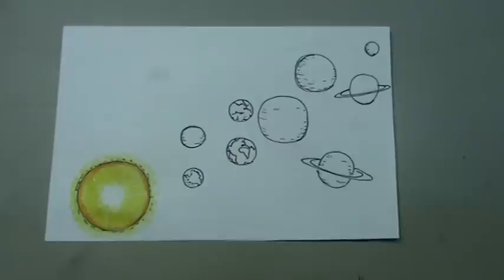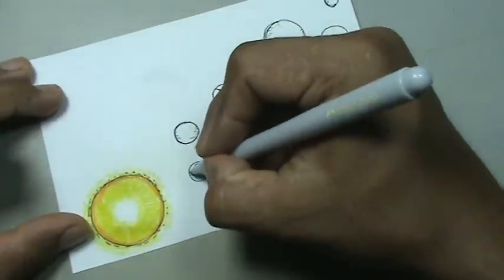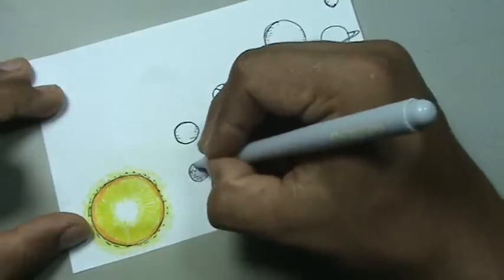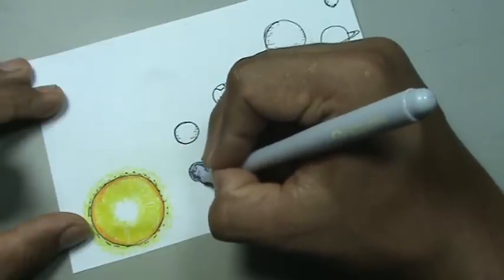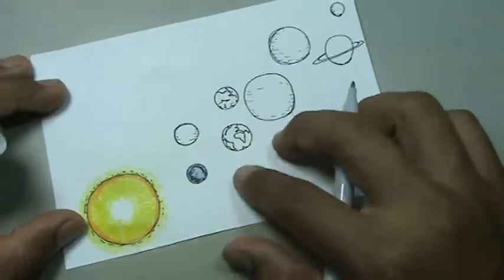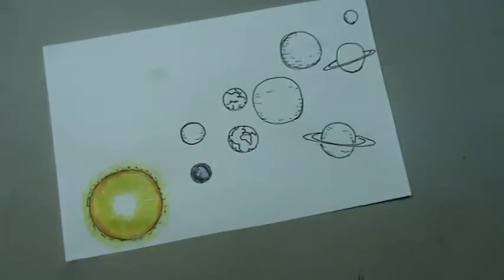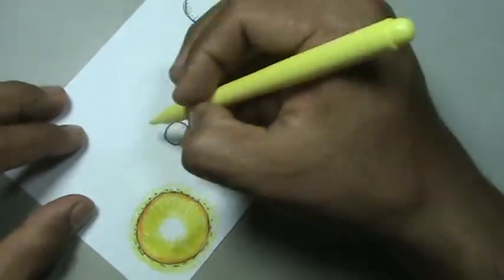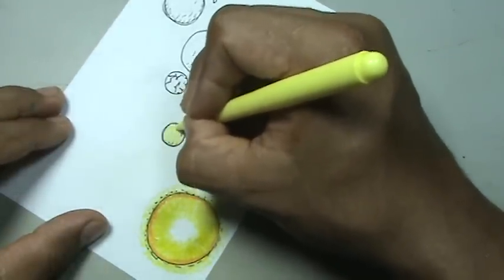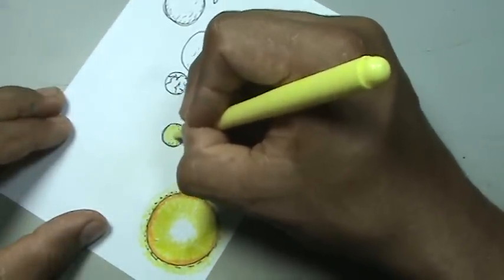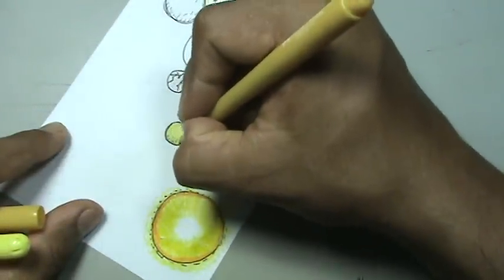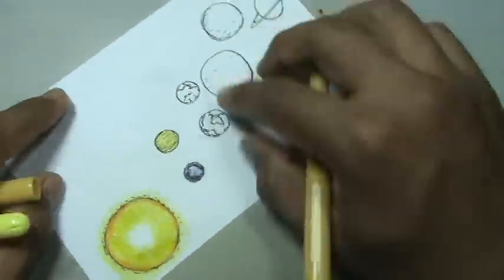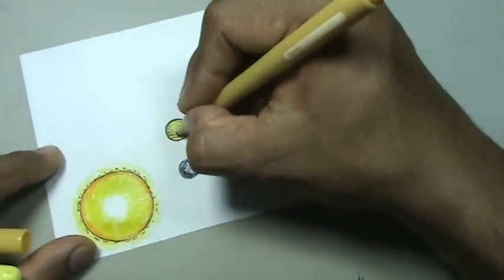Vamos a trabajar a Mercurio con un color gris. Aplicamos el color gris a Mercurio. Para Venus vamos a trabajar un poquito el amarillo claro. Y vamos a darle unas pequeñas líneas de esta manera para darle como el efecto de las líneas que tiene este planeta.